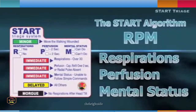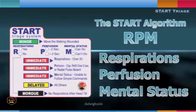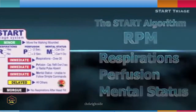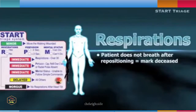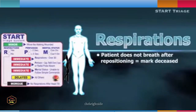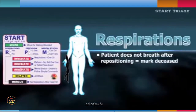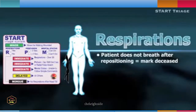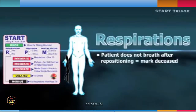Remembering the formula called RPM will guide you through the START triage assessment process. Respirations: if the patient is not breathing and does not begin breathing once the airway has been opened, mark the patient as deceased or black and move to the next patient. Triage team members should not begin CPR on a patient who is not breathing and does not begin breathing once their airway is opened.